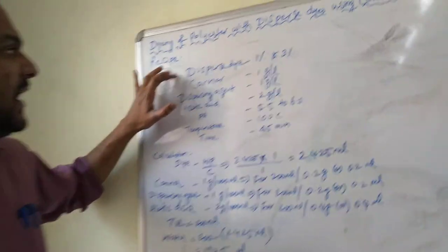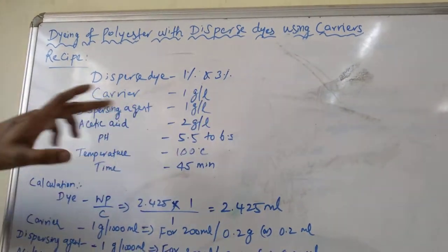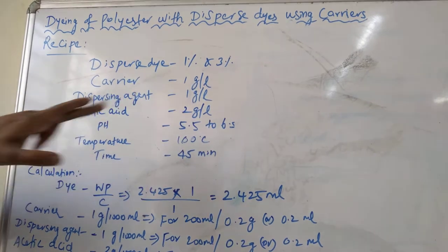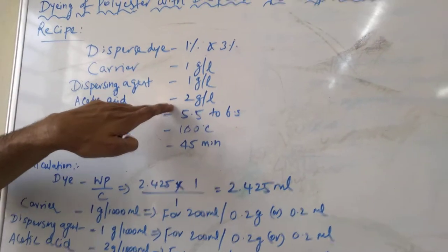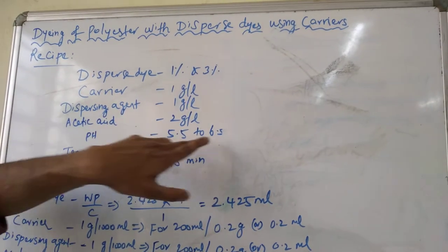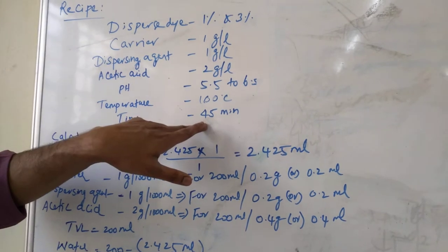For this dyeing, as usual, you take the dispersed dyes of 1 percent and 3 percent, two different shades. Carrier of 1 gram per liter, dispersing agent of 1 gram per liter, acetic acid 2 grams per liter, pH around 5.5 to 6.5, temperature of 100 degrees centigrade, time 45 minutes.